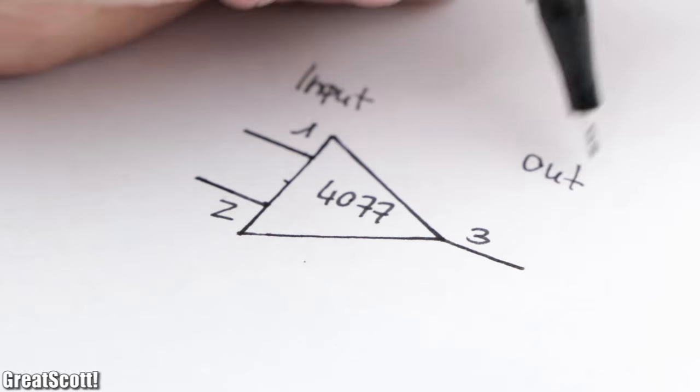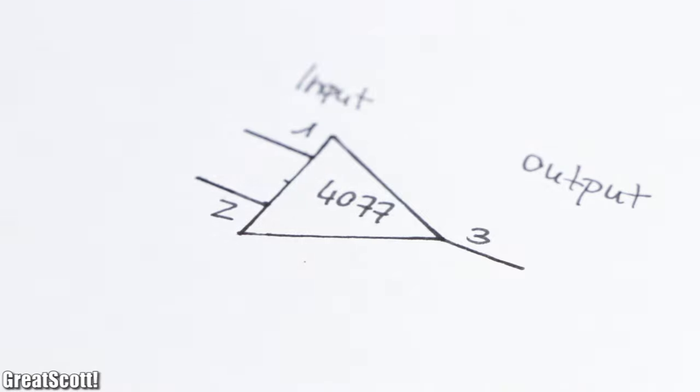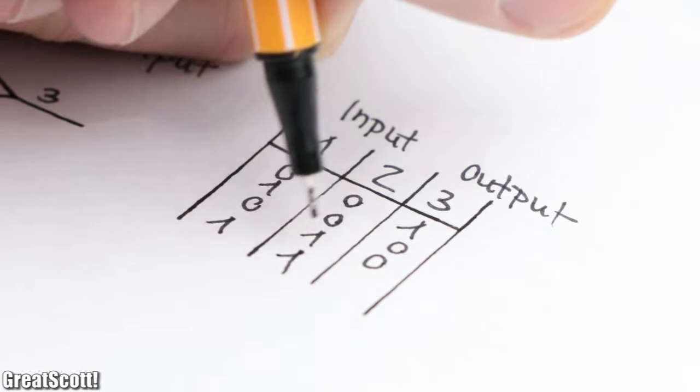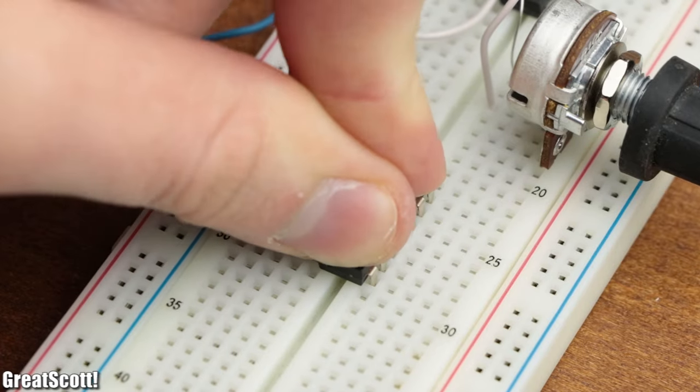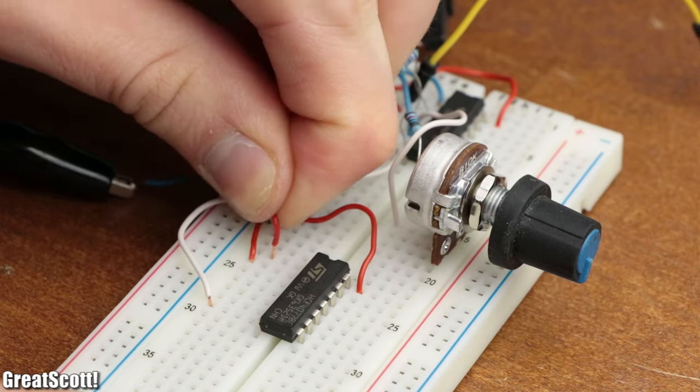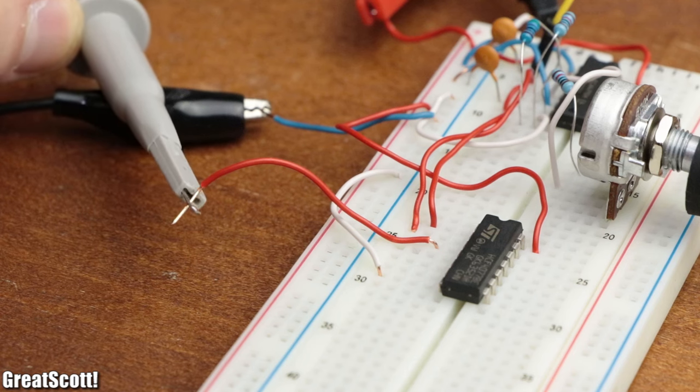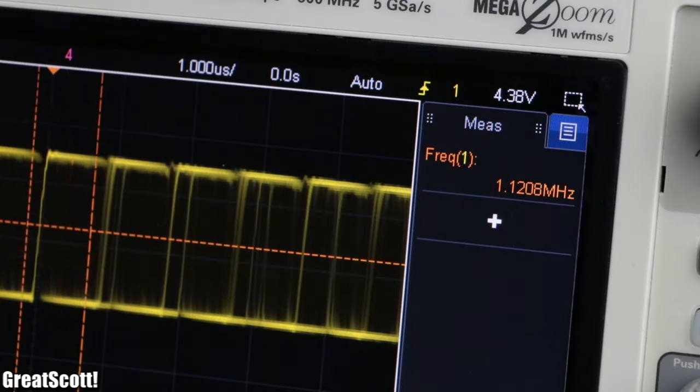Next, we got the 4077 XNOR IC, whose output voltage behaves according to this truth table. If we would add it to the breadboard circuit and connect the two oscillator signals to its inputs, it would create an output voltage which contains the sum and difference of the two oscillations.